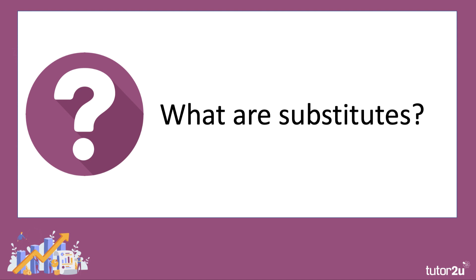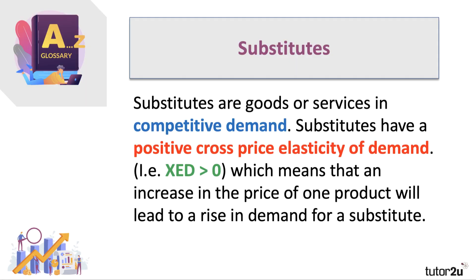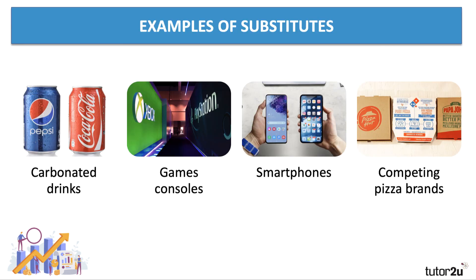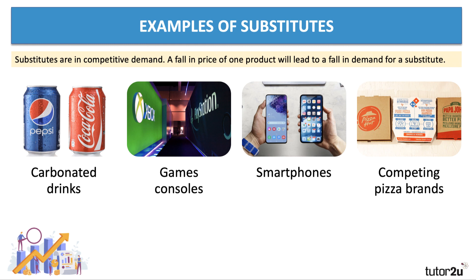Substitutes are goods and services in competitive demand — they're competing for your spending, your budget, your custom. Substitutes have a positive cross price elasticity of demand; the XED (or CPE) will be greater than zero. That means an increase in the price of one product will lead to a rise in demand for a substitute. Examples include fierce competition between Pepsi and Cola, Xbox and PlayStation, smartphones, and competing pizza brands like Pizza Hut, Papa John's, and Domino's.